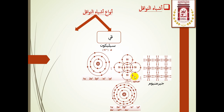مثلا السيليسيوم: تحتوي ذرة السيليكون على 14 إلكترون موزعة كالتالي: في المدار الأول إلكترونان، والمدار الثاني ثمانية إلكترونات، والمدار الخارجي الرابع به أربعة إلكترونات. ترتبط هذه الإلكترونات بذرة مجاورة لديها أربعة إلكترونات أيضا في المدار الخارجي. هنا ذرة السيليسيوم مشبعة ومداره الخارجي ممتلئ، لدينا 14 إلكترون و14 بروتون، فهي مستقرة كهربائيا لا تحتاج إلى إلكترونات إضافية ولا تُغادرها.